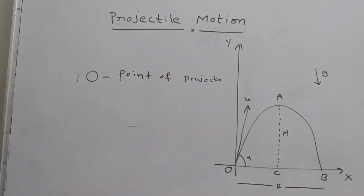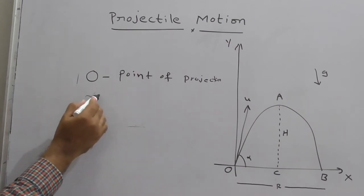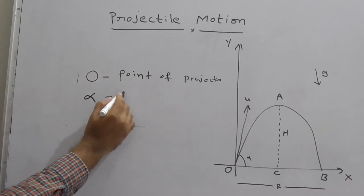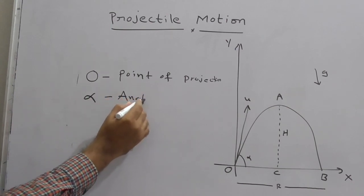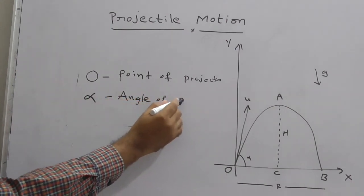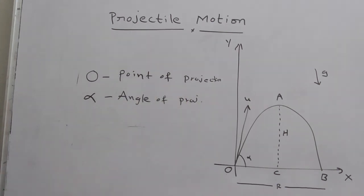What is alpha? Alpha is the angle of projection.